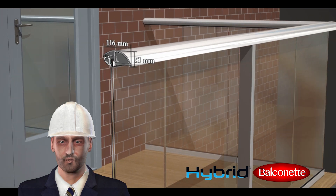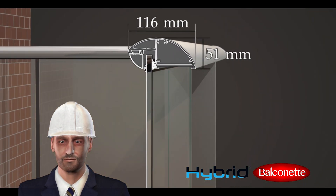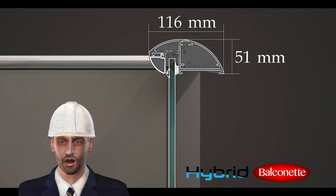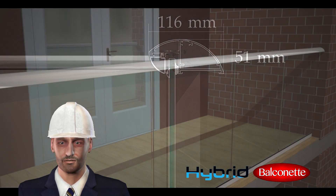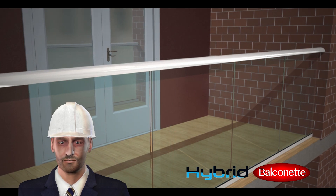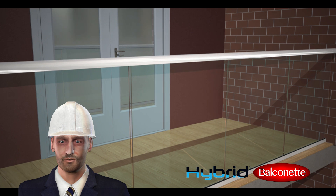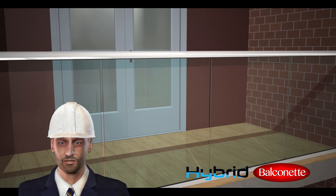The Aerofoil system uses a uniquely designed handrail that possesses an Aerofoil shape and is 116 mm wide and 51 mm high. We have created a set of structural calculations on the application of the Aerofoil system in accordance with BS6180.